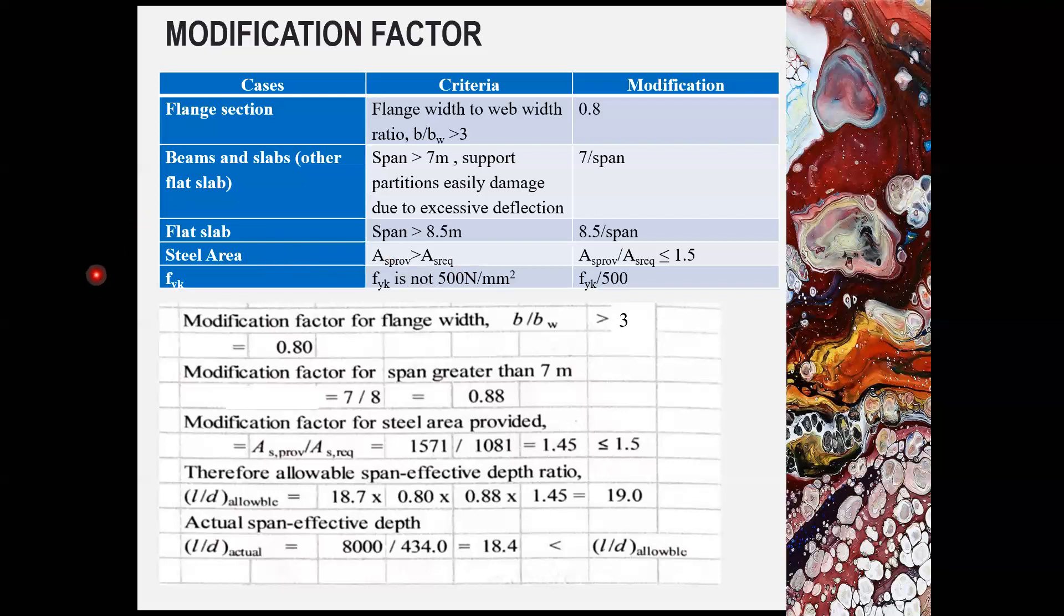The last case is FYK. The l over d ratio indicated in the euro code is based on 500 newton per mm squared. If the FYK in your design is not 500 newton per mm squared, you need to use the modification factor FyK divided by 500. So let's look at the modification factor that's suitable in your case.